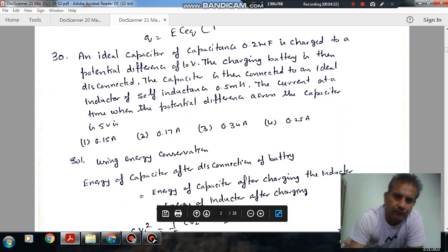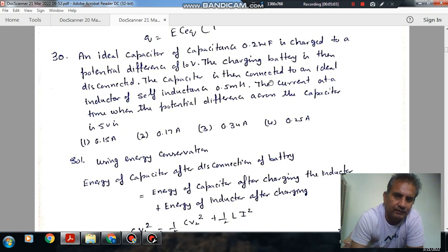Next. An ideal capacitor of capacitance 0.2 microfarad is charged to a potential difference of 10 volts. The charging battery is then disconnected. The capacitor is then connected to an ideal inductor of self-inductance.